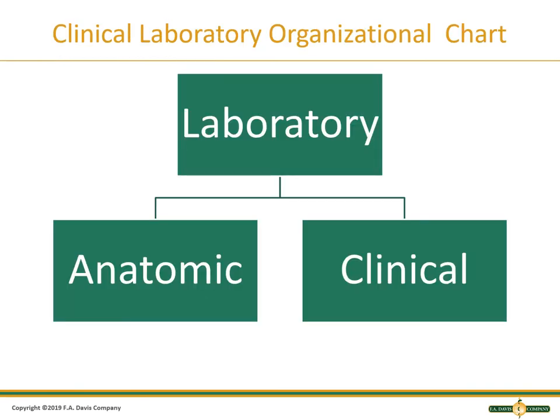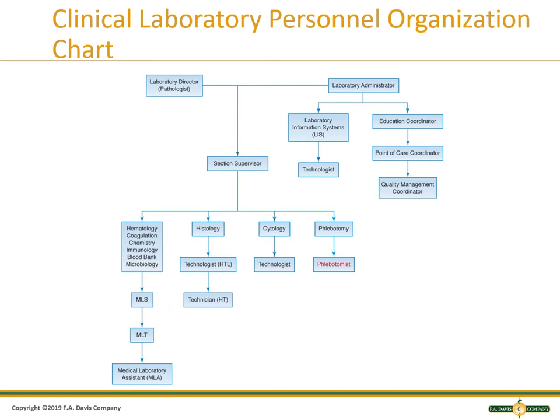The laboratory is divided into two main sections: anatomic pathology and clinical laboratory. This is an example of an organizational chart. You can see the laboratory director and laboratory administrator at the top. The laboratory director is normally in charge of all testing and ensuring it is done properly, while the laboratory administrator is in charge of quality coordination, point of care, education, hiring, and firing. The lab director, who is a pathologist, is in charge of ensuring the science is done correctly.